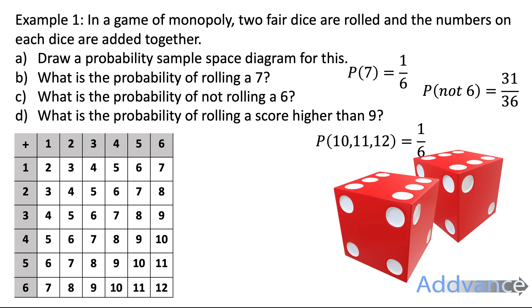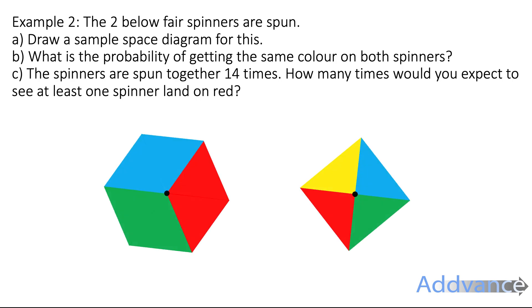That's example 1. Let's have a look at example 2. The 2 below fair spinners are spun. Draw a sample space diagram for this. Then we're going to work out the probability of getting the same colour on both spinners. The spinners are spun 14 times. How many times would you expect to see at least one spinner land on red?